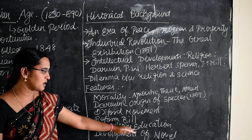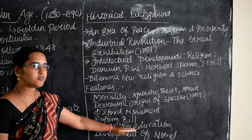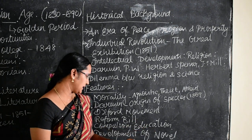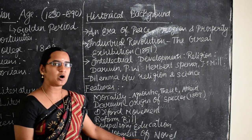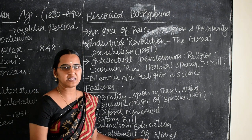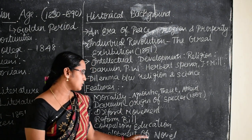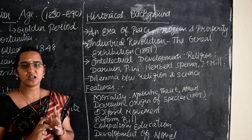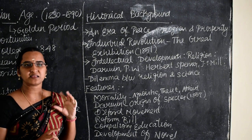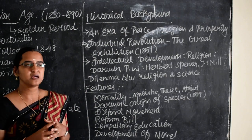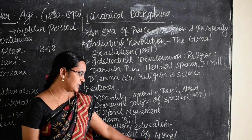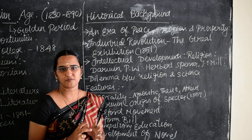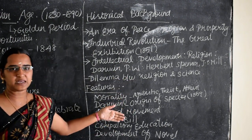Compulsory education was also made during the reign of Queen Victoria, so each and every person had to be educated in England in this period. And coming to the development of the novel — it is an age of the novel. There is a quote that 'a novel is a pocket diary,' as each and every person carried a novel while travelling. This quote was set by Marine Crafts. Thank you. That was the outline of the Victorian Age.